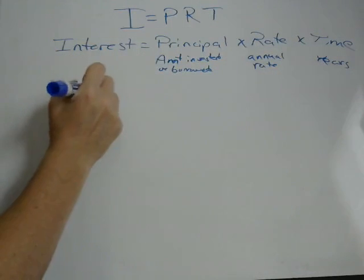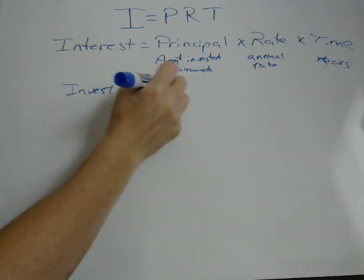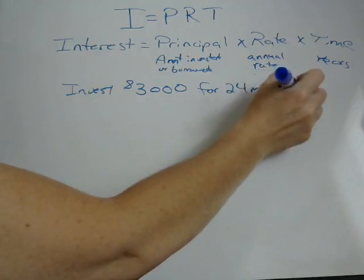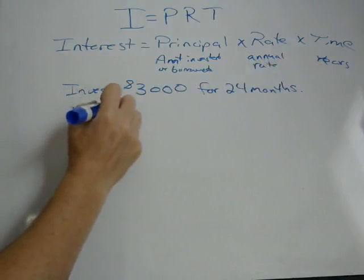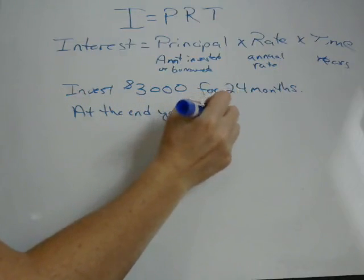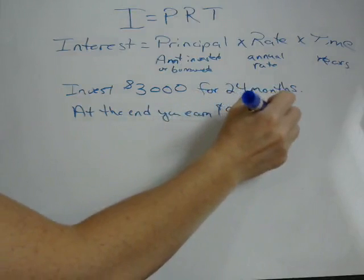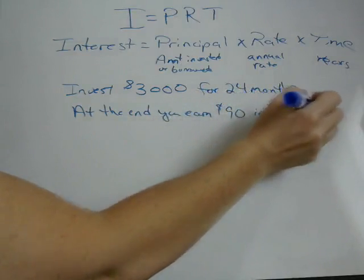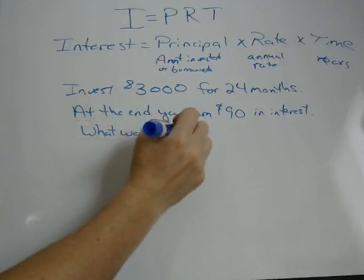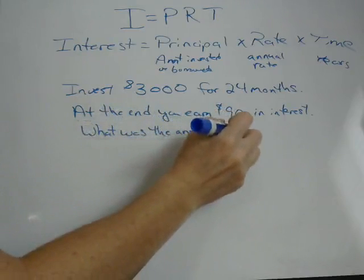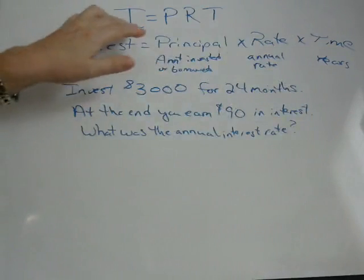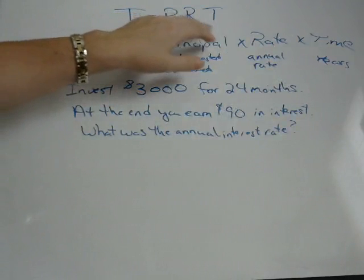Let's look at another problem. Suppose you invest $3,000 for 24 months. At the end, you earn $90 in interest. What was the annual interest rate? Here they're giving us the interest, the principal, and the time — but we don't know the rate.